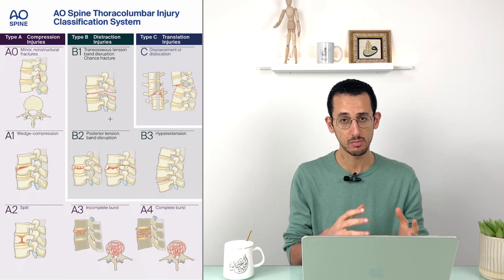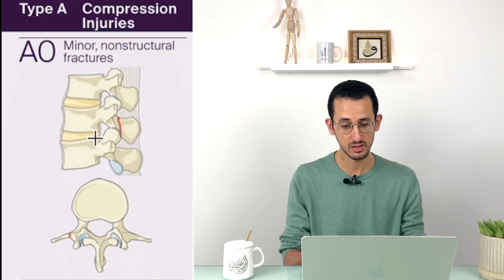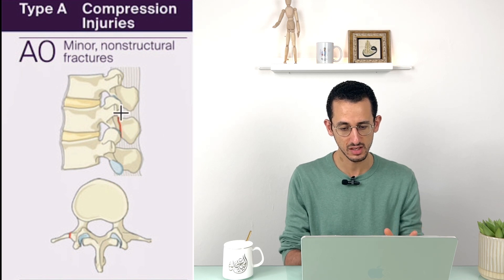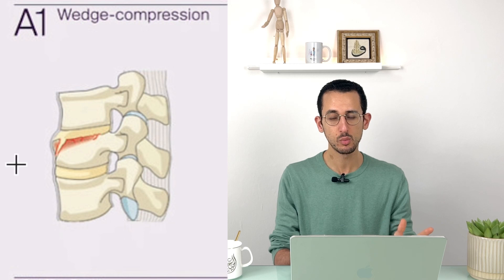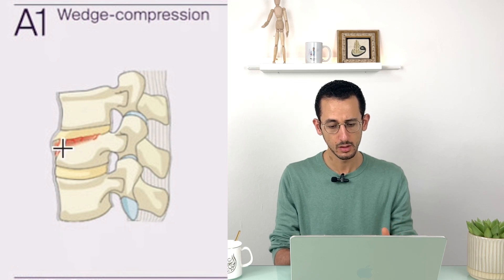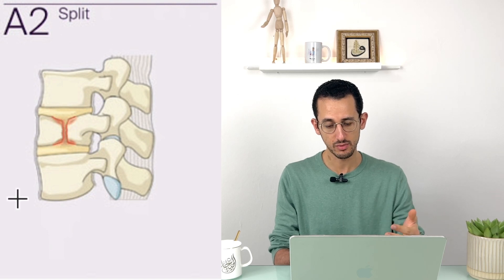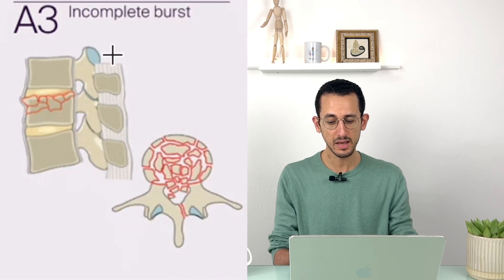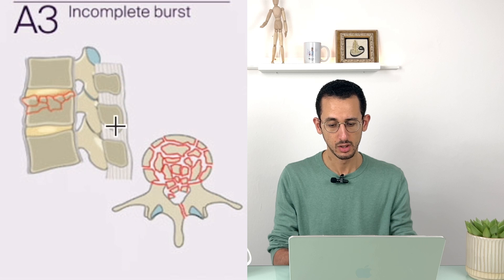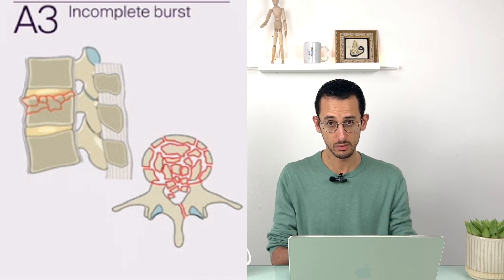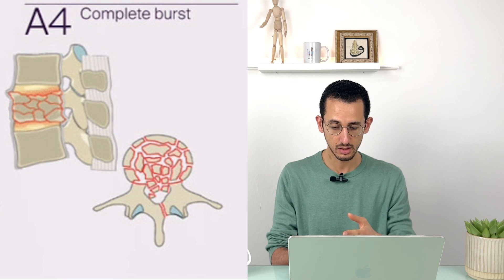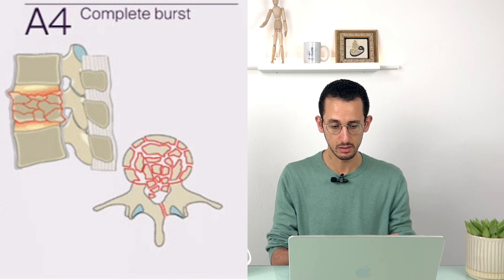Under Type A, which is the compression fracture: A0 is a minor injury such as a transverse process fracture, not widely used as such. A1 is a simple wedge compression fracture. A2 is a more severe compression fracture with a split through the body. A3 and A4 are subtypes of burst fracture — A3 being incomplete burst fracture involving a single endplate with the posterior vertebral wall included, and A4 being complete burst fracture involving both endplates with the posterior wall included.